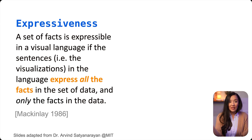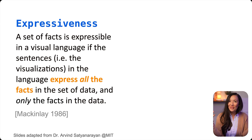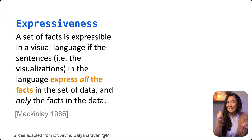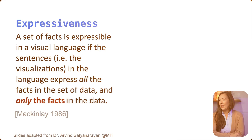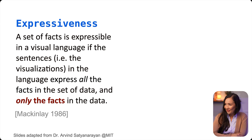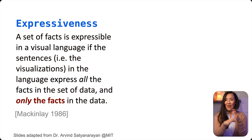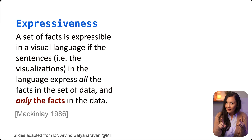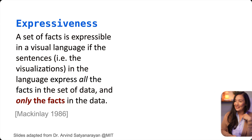I want to be clear that the visualization designer didn't do something wrong — they didn't remove or modify the data. They just chose the wrong visualization that is not expressive of this particular dataset. Now let's move on to the second part of our definition: expressing only the facts in the dataset. Not only do you have to show all of the relationships in the data, but you must show only the relationships in the dataset.